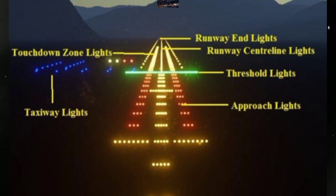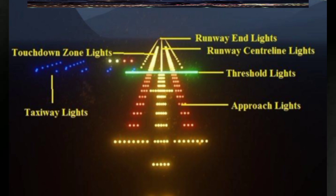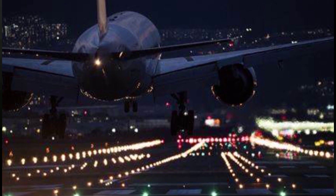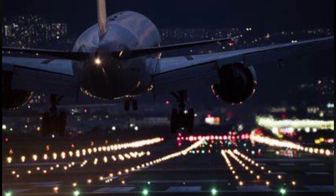Centerline lights are typically white and spaced at regular intervals along the centerline of the runway. At some airports, centerline lights may be augmented with additional lighting systems, such as touchdown zone lights and approach lighting, to further aid pilots during landing and approach phases. All these lighting elements work together to create a well-defined and safe visual path for aircraft operations on the runway.